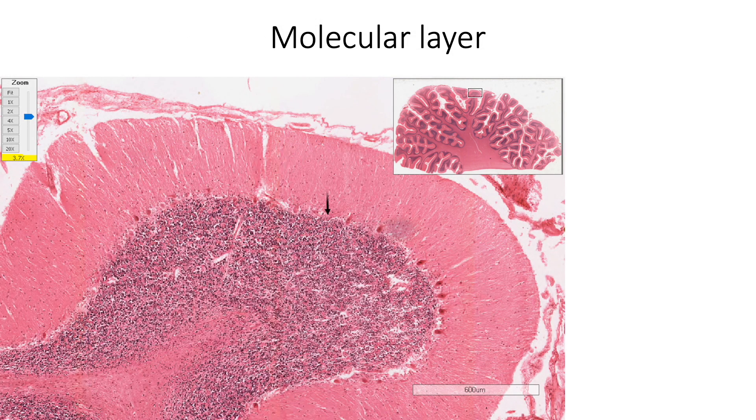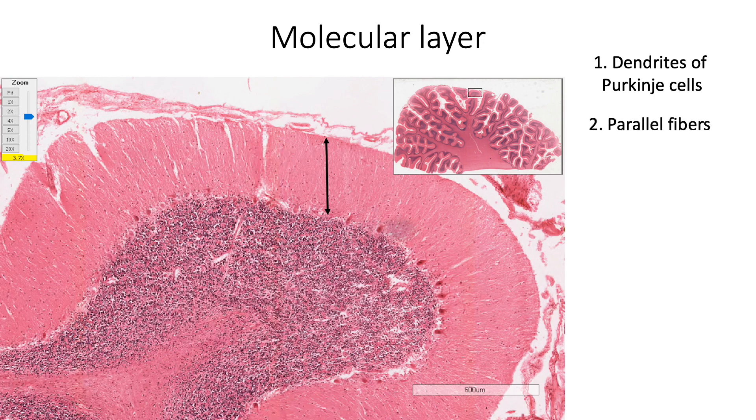Molecular layer is the pale staining superficial layer, which mainly consists of neural processes and it has very few cells. The neural processes found in this layer include dendrites of the Purkinje cells, parallel fibers which arise from the axons of the granule cells and the climbing fibers.